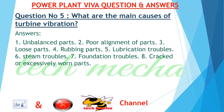Question number 5: What are the main causes of turbine vibration? Answers: 1. Unbalanced parts. 2. Poor alignment of parts. 3. Loose parts. 4. Rubbing parts. 5. Lubrication troubles. 6. Steam troubles. 7. Foundation troubles. 8. Cracked or excessively worn parts.